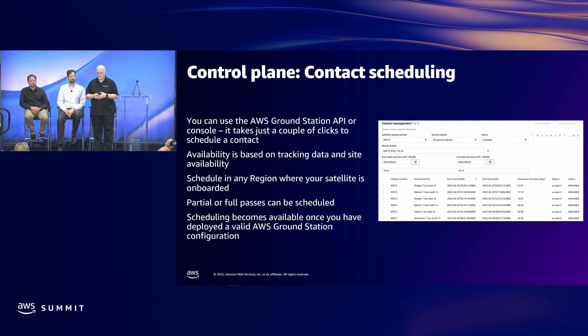The scheduling interface on AWS Ground Station lets you select upcoming contacts for a given mission profile — we'll talk more about mission profiles shortly — and a satellite NORAD ID and the regions where that satellite has been onboarded. From this interface you can schedule contacts, cancel contacts, and see the status of past contacts.